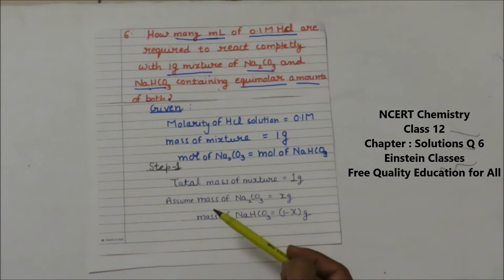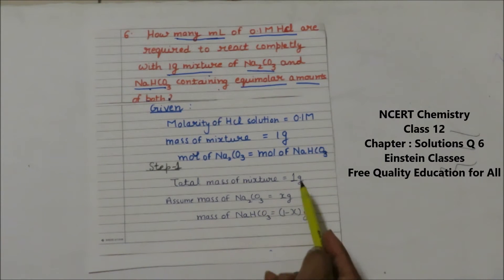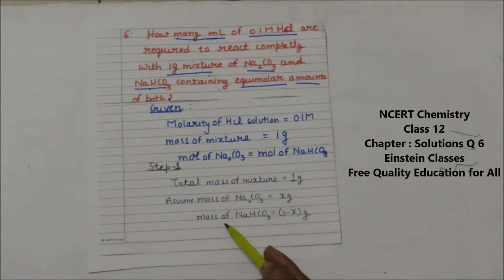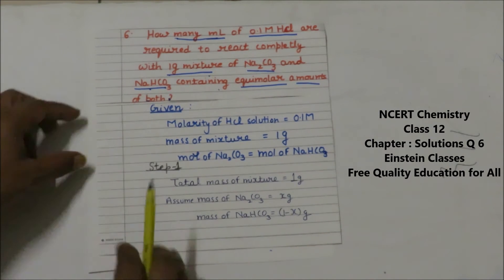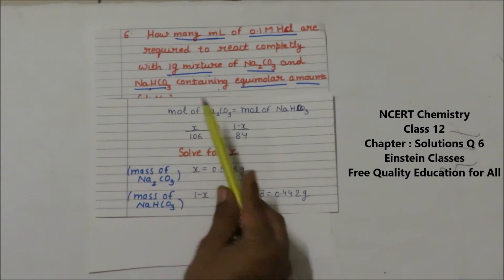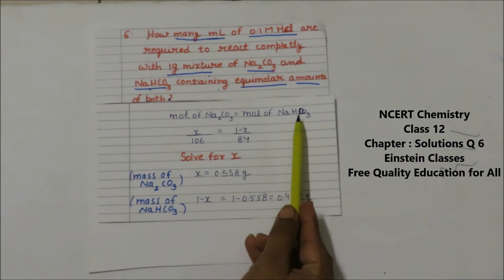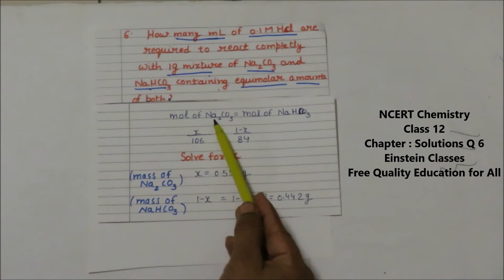First, we need to find the mass of Na₂CO₃ and NaHCO₃ in the mixture. Let's assume that the mass of Na₂CO₃ in the one gram mixture is X grams, so the mass of NaHCO₃ will be (1 − X) grams. The moles of Na₂CO₃ and NaHCO₃ are equal.